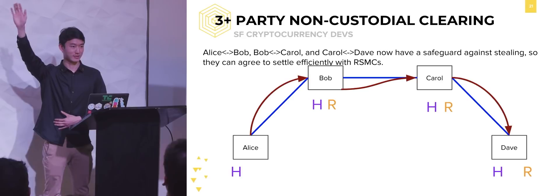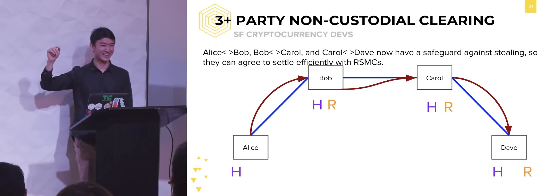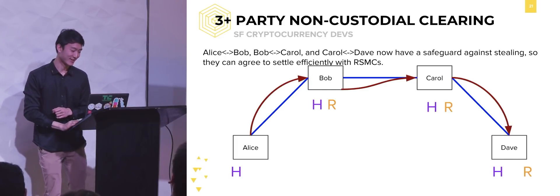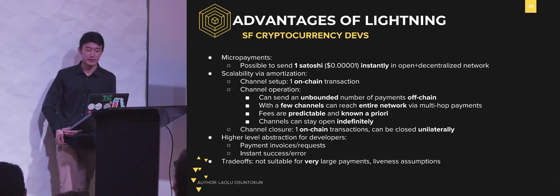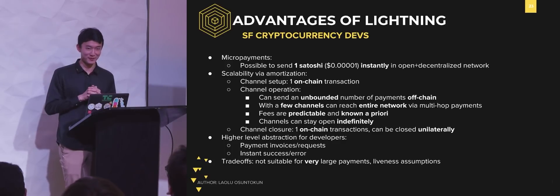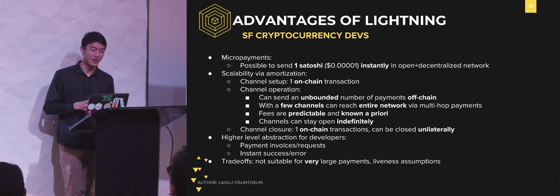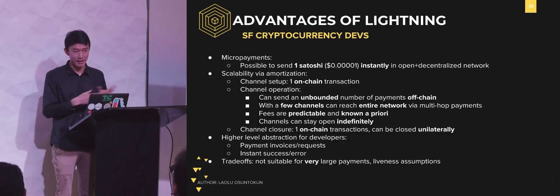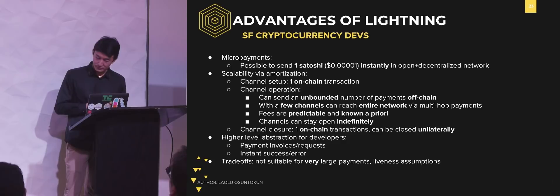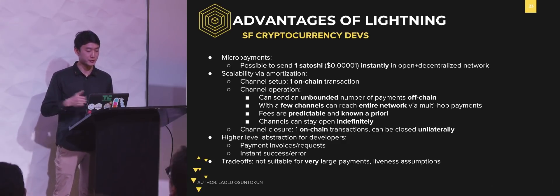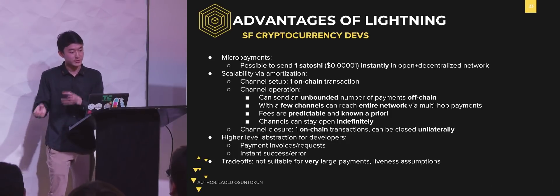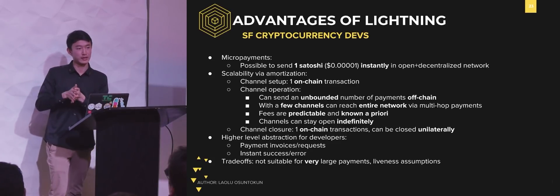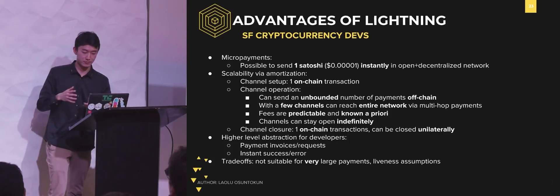Let's move on. Let's talk about some of the advantages of Lightning. Now it's possible to send one Satoshi instantly in this open and decentralized network without having to trust anyone — that's super cool. You get really good cost reduction by amortizing your on-chain transaction fees. You just make one on-chain transaction to create a payment channel, and after that you have access to this whole financial network for as long as you need. You can make an unbounded number of payments because each payment isn't actually being saved anywhere — it's just between you and your counterparty. You can send thousands of transactions per second, scaling the network to even millions of transactions per second.